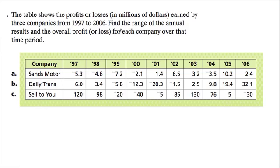Let's start with the range for each company first. Range you might remember is just the difference of the high minus the low. In each case what we have to do is identify the high and low for each company and then subtract them and find the difference.